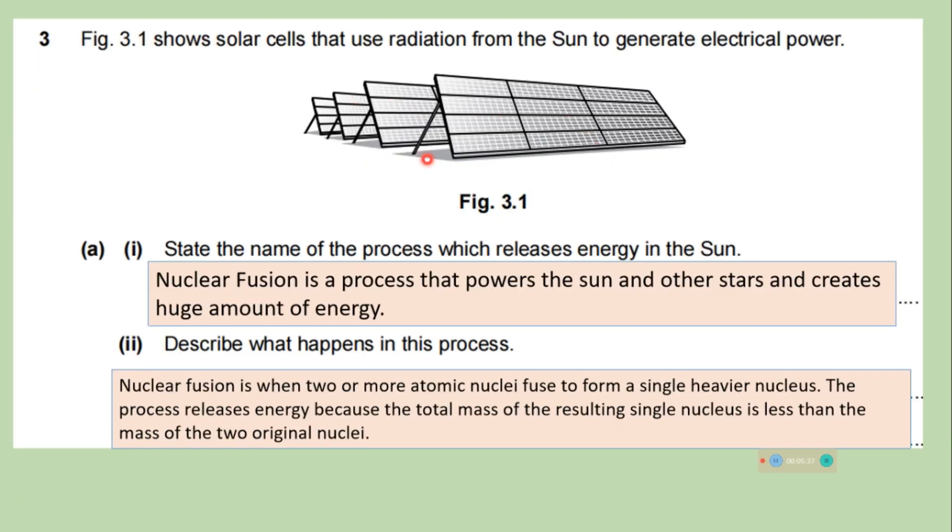This figure shows solar cells that use radiation from the sun to generate electrical power. State the name of the process which releases energy in the sun. So nuclear fusion is a process that powers the sun and other stars and creates huge amount of energy. The process is nuclear fusion. Describe what happens in this process. Nuclear fusion is when two or more atomic nuclei fuse to form a single heavier nucleus. The process releases energy because the total mass of the resulting single nucleus is less than the mass of the two original nuclei.